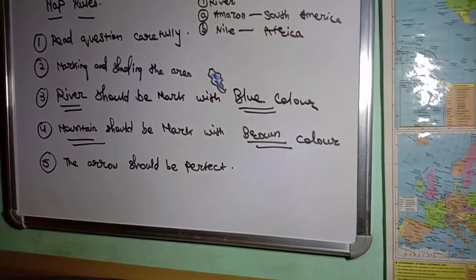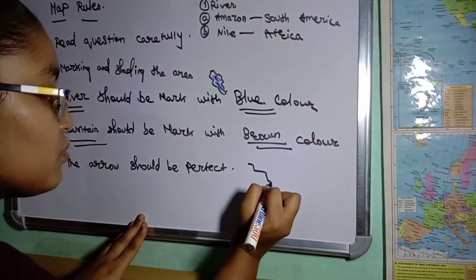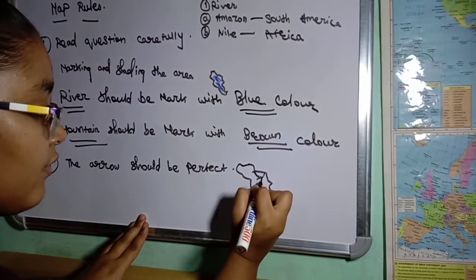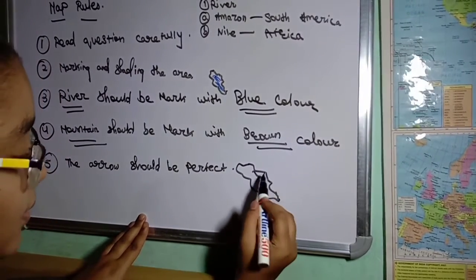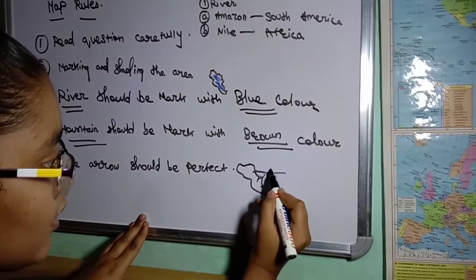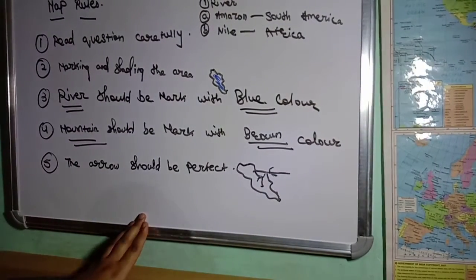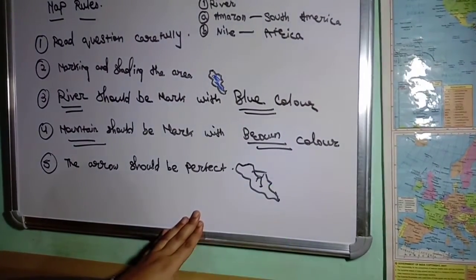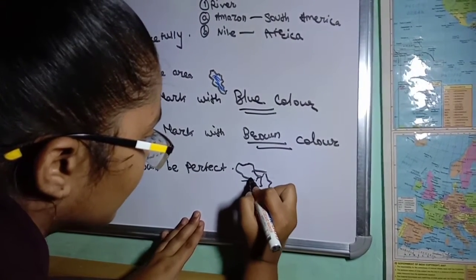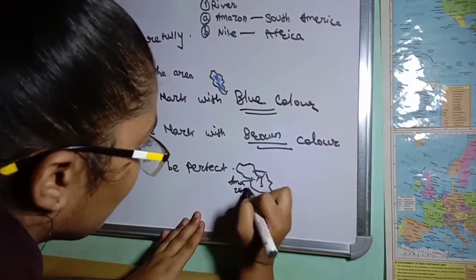Next rule: the arrow should be perfect. The arrow should be placed properly pointing to the area. We will use the arrow wherever needed. Here is the river, here is the label, and here is the arrow — the arrow should be properly marked.